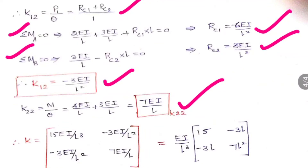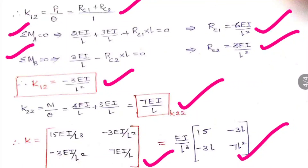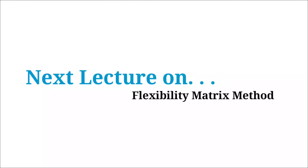Now all elements are found. Substituting into the matrix format and taking EI/L³ as a common factor gives the complete stiffness matrix. This is all about the stiffness matrix method — to be proficient here, you must already be clear on slope deflection and moment distribution methods, since those concepts are applied at every step. The next lecture will cover the flexibility matrix method.